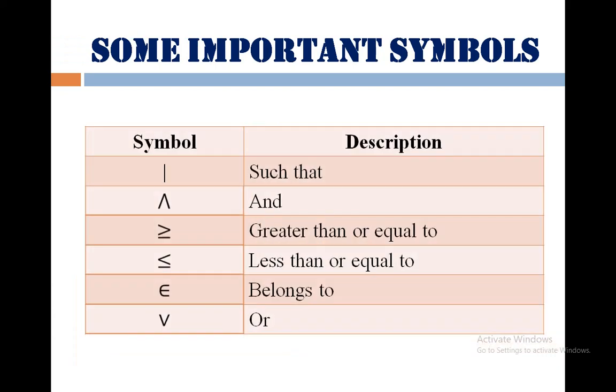Next we move towards some important symbols. The first, the short frame of like margin frame, it is read as such that. The next you have somewhat converse of letter V. We use it as AND. The next one is greater than or equal to and after that is less than or equal to. Here easy to remember, if you are writing from left to right, the frame of symbol is open, it will be greater than or equal to. If it is closed, it will be used as less than or equal to.